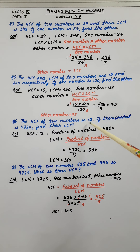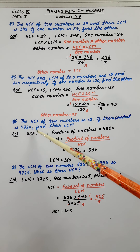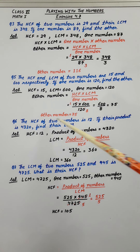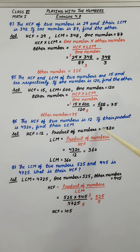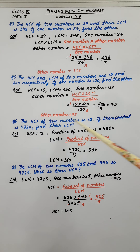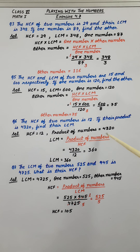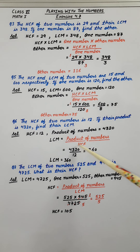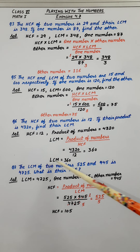Coming to the 6th question: the HCF of 2 numbers is 12. If their product is 4320, find their LCM. HCF is given as 12 and the product of both numbers is 4320. To find LCM, the formula is product of numbers upon HCF. To find HCF, the formula would be product of numbers upon LCM. Here we calculate LCM: 4320 divided by HCF 12, and the result is 360. So LCM is 360.